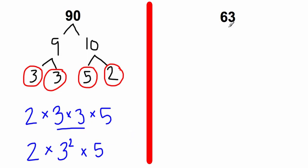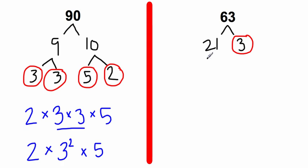Now let's do an example for the number 63. We should think: what times what equals 63? We've got 21 times 3, which gives us 63, so we're going to do a factor tree: 21 times 3. We know 3 is a prime number — it only has two factors — so we're going to circle the 3. Now we need to keep breaking that 21 down. What times what is 21? Well, 3 times 7 equals 21.